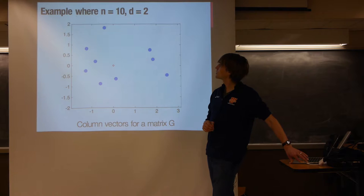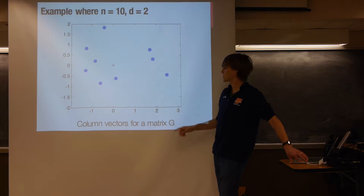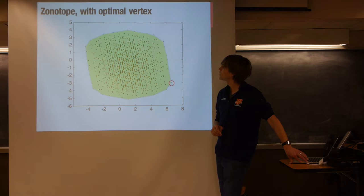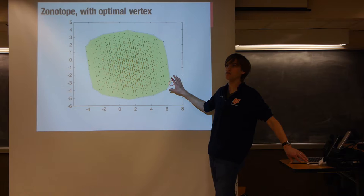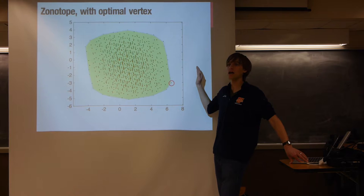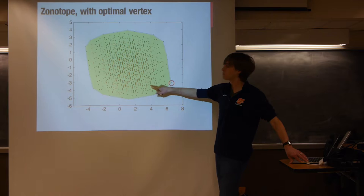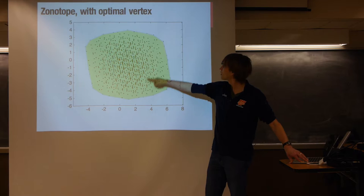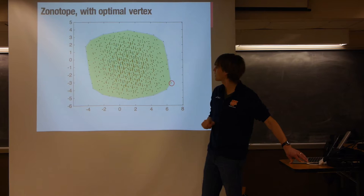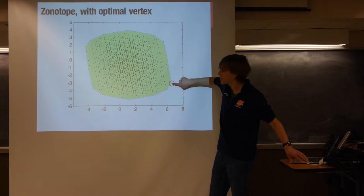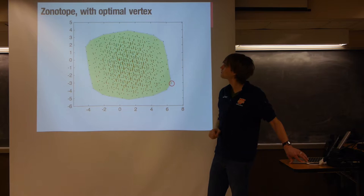A quick example with n=10, d=2: all these vectors correspond to columns of a matrix — generators of a zonotope. Plotting all binary vectors (exponentially many black dots), you can see there are far fewer vertices of the zonotope than black dots in the center. The blue dots are the generators. To solve this problem, it's sufficient to march along the edge of the zonotope, and eventually you will find a vertex that maximizes the objective function.